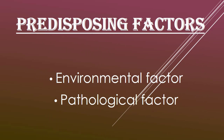Predisposing factors involve environmental factors and pathological factors. Environmental factors which lower body resistance include malnutrition, poverty, overcrowding, unhygienic conditions, alcoholism, and heavy smoking. Pathological factors which lower body resistance include diabetes mellitus, steroids, chronic lung disease, lymphoma, and cytotoxic drugs.